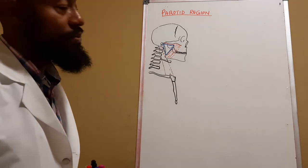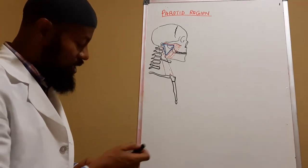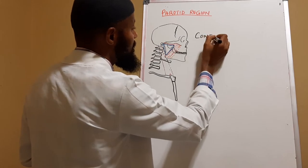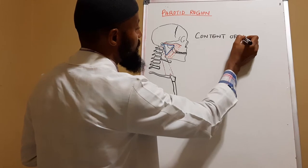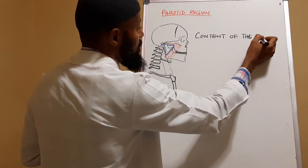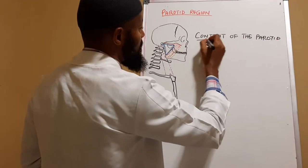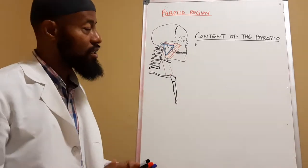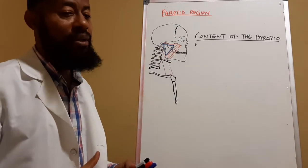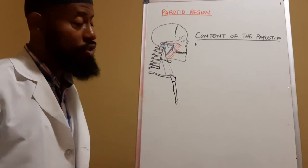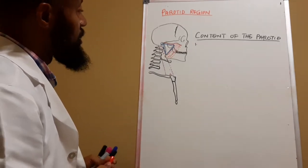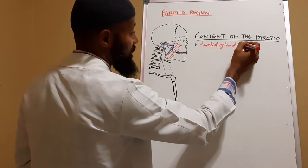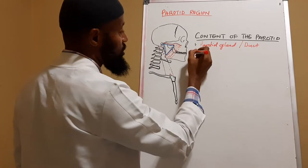That is the parotid region. Now, there are structures found in the parotid region — what are the contents of the parotid region? Number one content is the parotid gland itself. The parotid gland is the major occupant of the parotid region — that is a very important point to note. The parotid gland and its ducts.